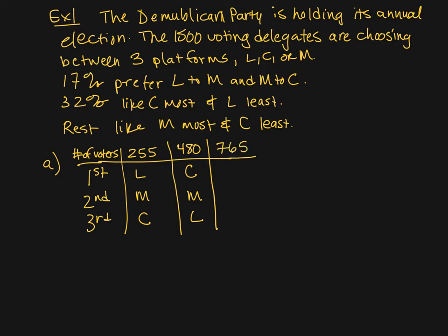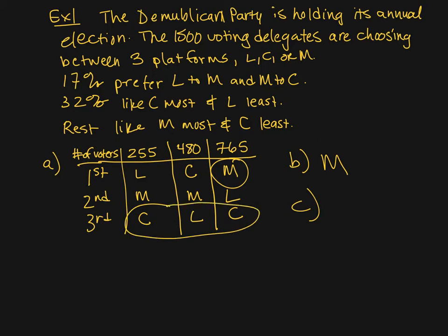The last group likes M the most and C the least, leaving L in the middle. Which candidate has the most first place votes? Looking at the schedule, the most first place votes is M. Which candidate has the least last place votes? You might automatically say L has the least because it has 480, but notice M is missing — M has no last place votes. So it's actually M that has the least last place votes.